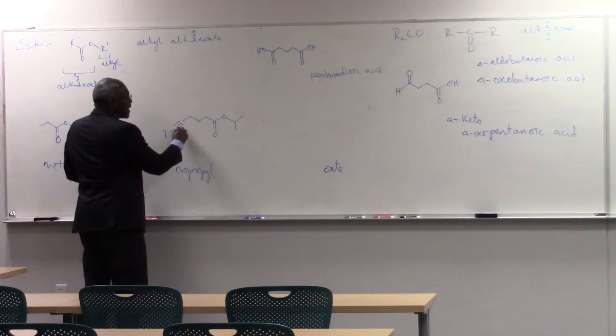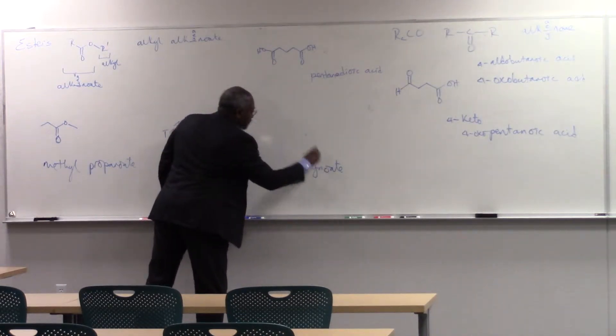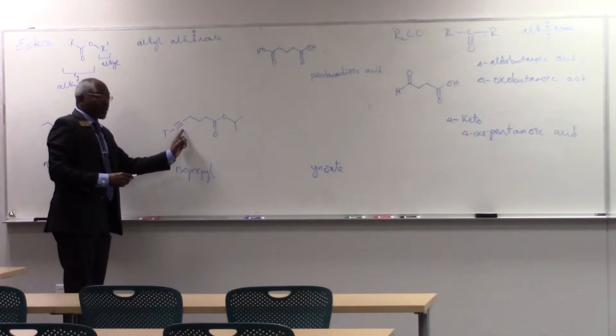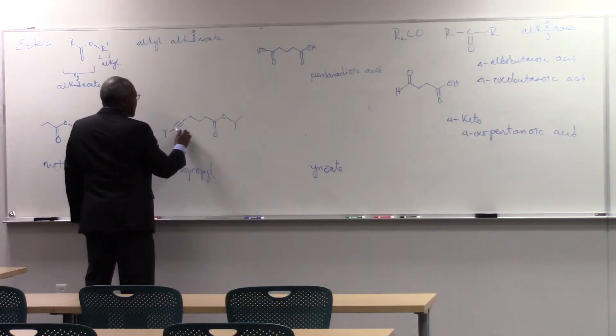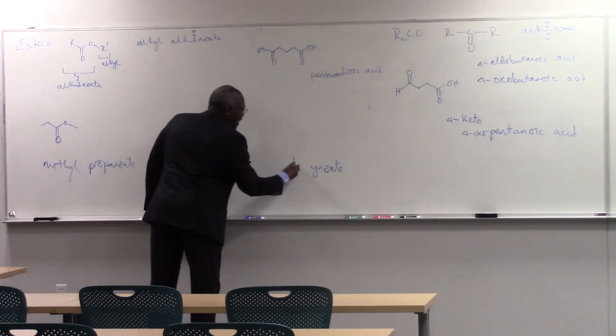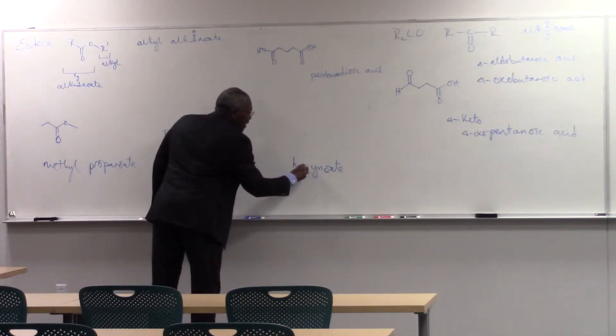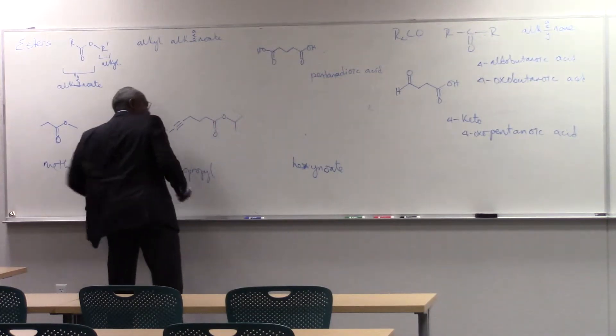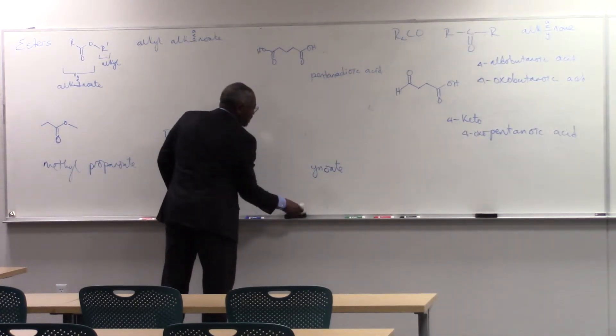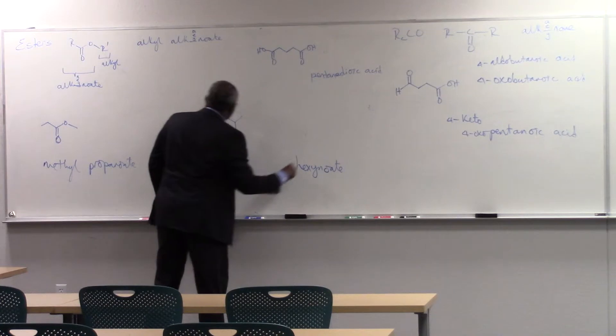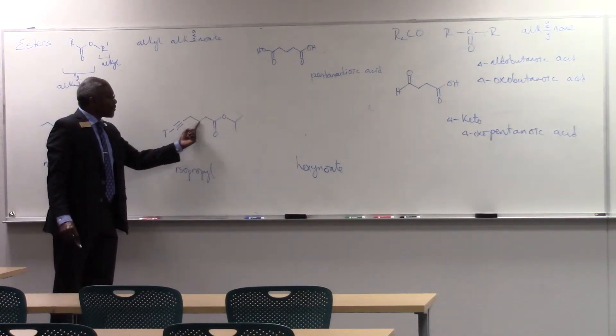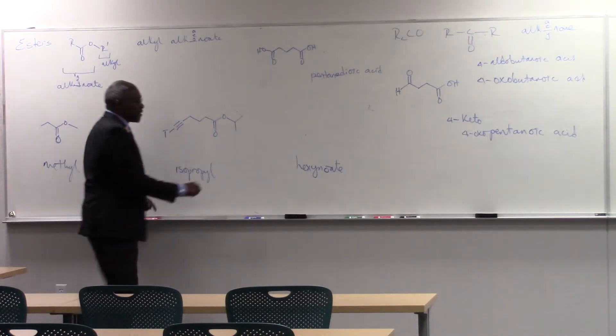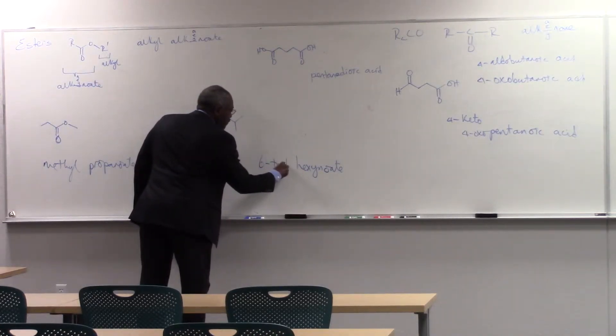It is an inoate, because of triple bond. I've got 1, 2, 3, 4, 5, 6 carbons. So it's a hexane. It's a hexanoate. But it's got a tritium on carbon 6. So it's a 6-tritiohexanoate.